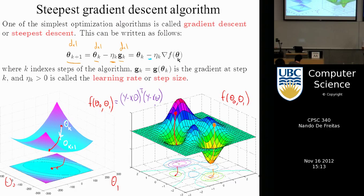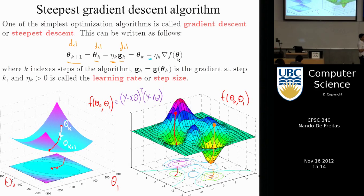There's a Python package called Theano for machine learning — I don't often use it in this course because many students are on Windows — but that package has automatic differentiation. If you give it a function f(theta), it will symbolically give you the gradient. We won't be using automatic differentiation here; we'll do the exercise of computing the gradient, and once we have it we just loop over the gradient descent update to reach the minimum.